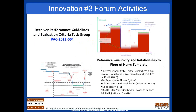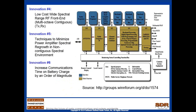Innovation number four is development of low-cost, wide spectral range RF front ends — we need front ends with multi-octave and contiguous behavior for both receivers and transmitters. Innovation number five covers techniques to minimize power amplifier spectral regrowth. As we pack diverse heterogeneous networks into the same spectrum, we must be very careful that receivers and transmitters behave properly, as spectral regrowth is often an issue that needs to be accounted for.